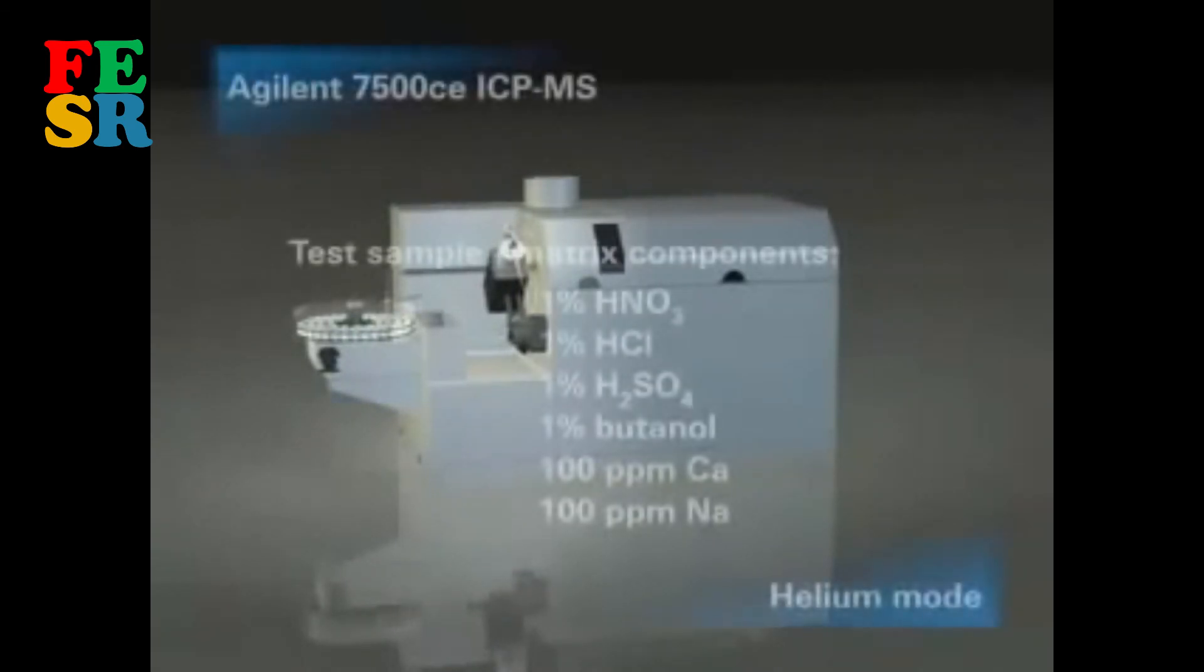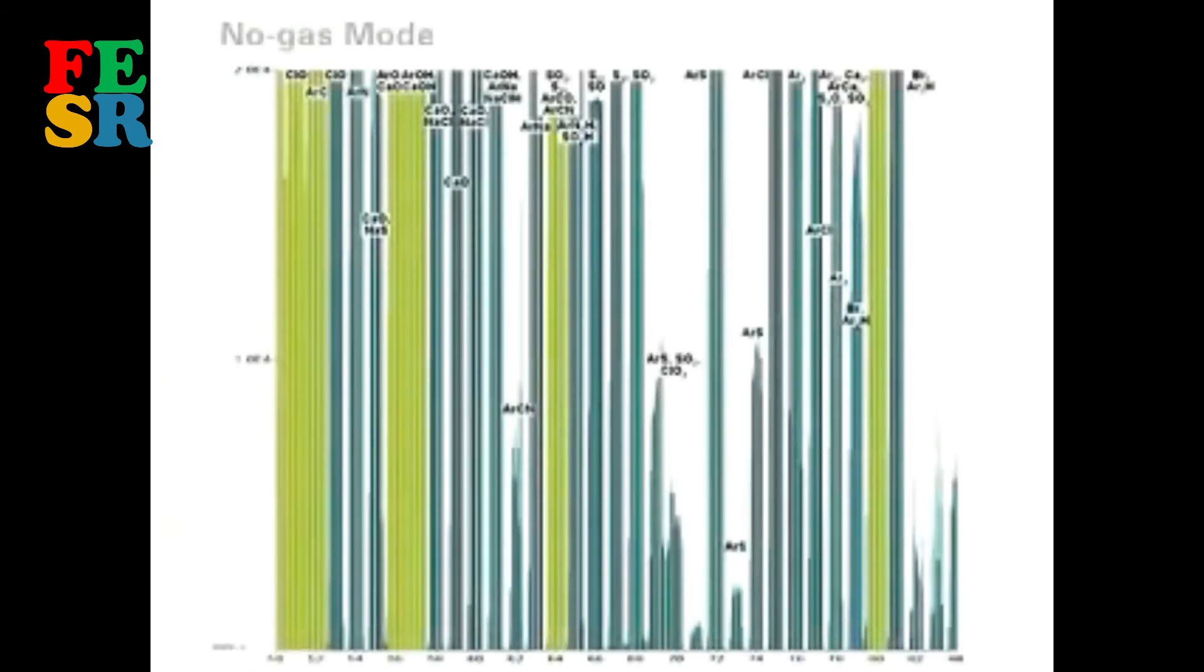To illustrate the interference removal power of the helium mode, a very challenging sample matrix containing these components was analyzed. Spectra were obtained for the mid-mass range where most polyatomic interferences occur. This spectrum shows the matrix interferences that occur in normal ICP-MS.